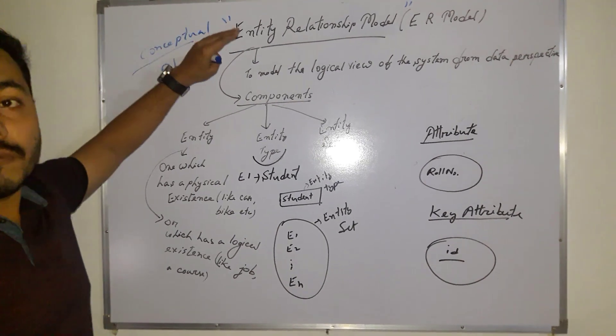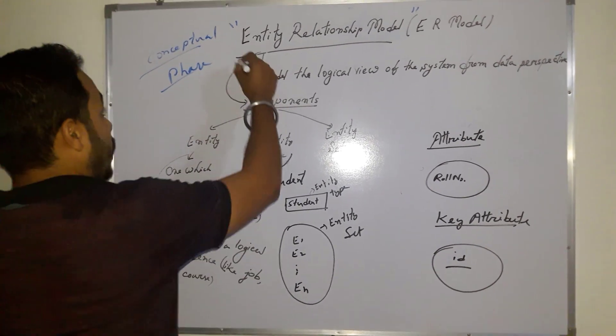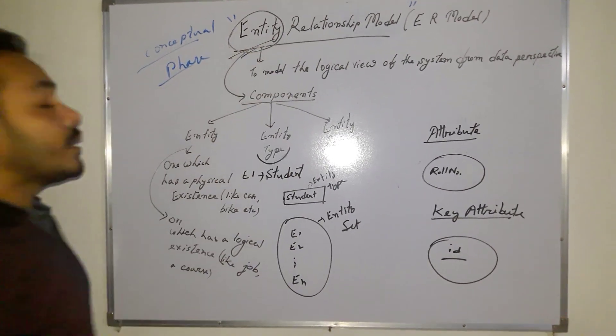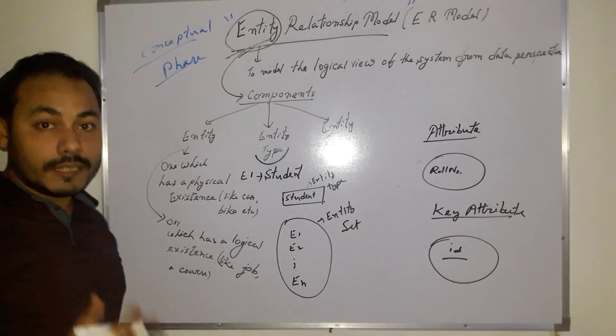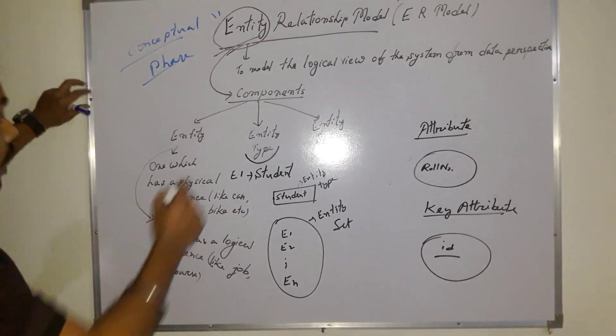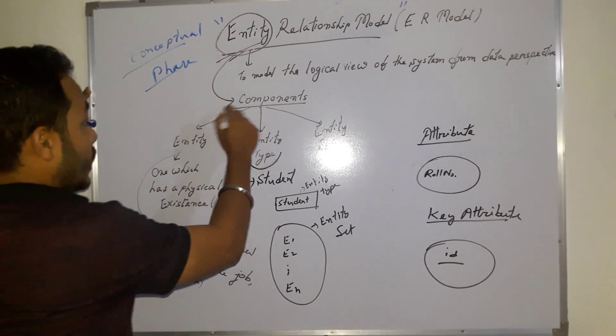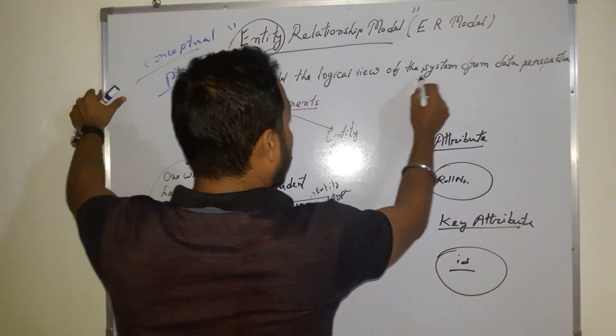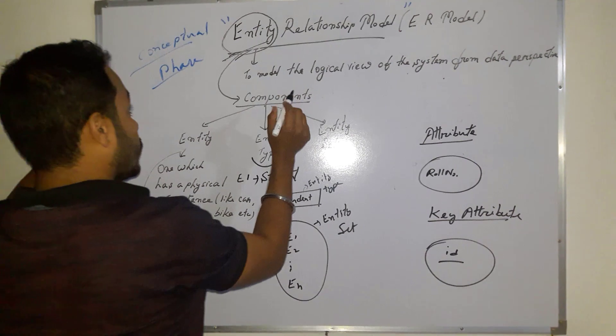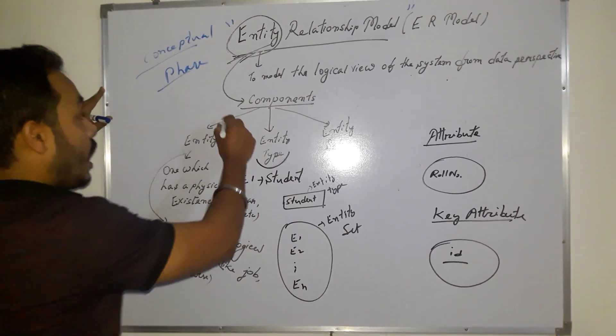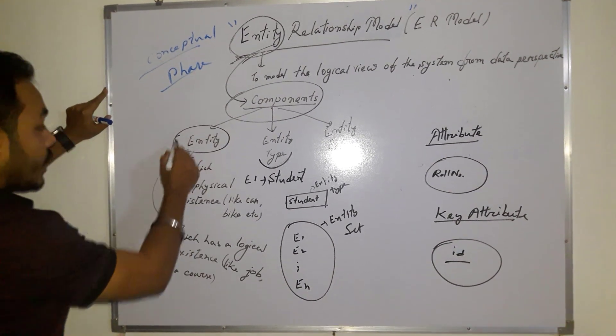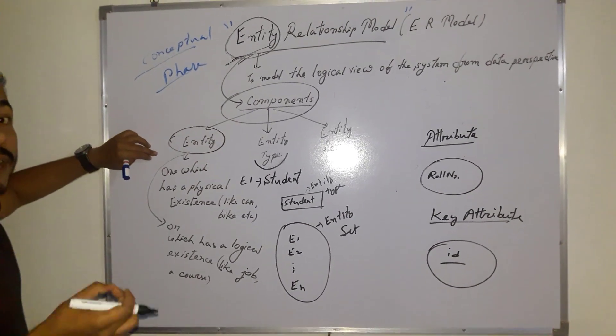Okay, so let's start. ER model or Entity Relationship Model. First thing you need to know is that this is coming under the conceptual phase. So the term where we are focusing is entity. What is entity? Entity means real-time object. What I have written here: to model the logical view of the data perspective, we are using Entity Relationship Model. And the components for this ER model - the first one is the entity. As I have said, entity is the real-time object.